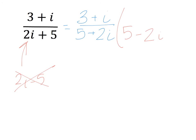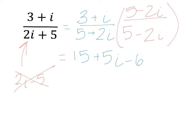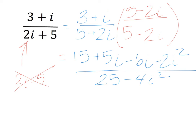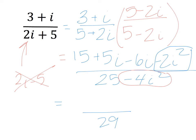So I'm assuming that you have a working knowledge of how this goes. I end up getting 15 plus 5i minus 6i minus 2i squared in my numerator. My denominator — this is a plus b times a minus b, which gives me a squared minus b squared — so that's 4i squared. i squared is negative 1, so this becomes plus 4, and our denominator becomes 29. And the numerator: negative 1 times negative 2 is positive 2. So I have 17 minus i over 29.